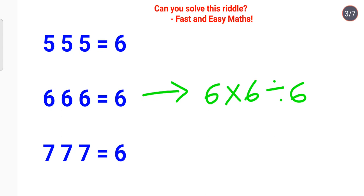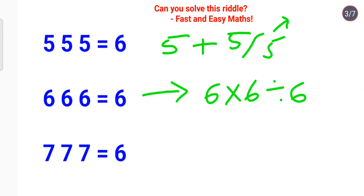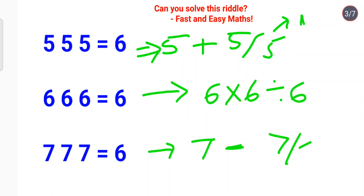For 5: we can do 5 plus 5 divided by 5. Five divided by 5 is 1, so 1 plus 5 equals 6. Similarly for 7: instead of plus we do a minus — 7 minus 7 divided by 7 — and that gives us the value equal to 6.